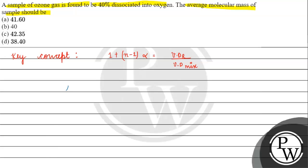हमें इसमें क्या-क्या दिया हुआ है? हमें दिया हुआ है alpha. Alpha 40% है, जिसे हम 0.4 लिख सकते हैं — 40 by 100 = 0.4. अगर हम देखना चाहें कि ozone कैसे टूटता है, तो 2 moles of ozone gives us 3 moles of oxygen.